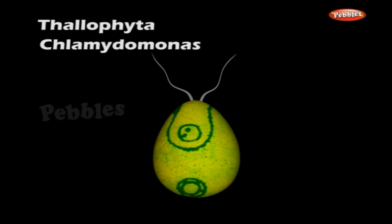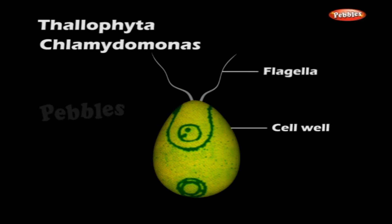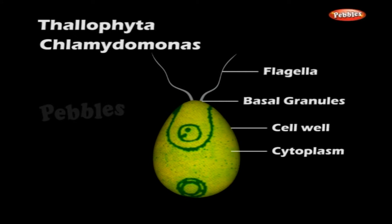The protoplast is surrounded by a definite layer of cellulose wall. It has a distinct anterior end which is narrow or beak-like, with two flagella coming out from the basal granules. The major portion of the protoplast is usually occupied by a cup or bowl-shaped chloroplast, with a single nucleus embedded in the colourless cytoplasm filling up the cup. Sometimes the chloroplast is star-shaped or lamellate in form.